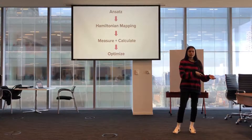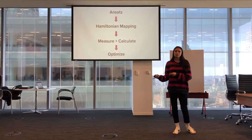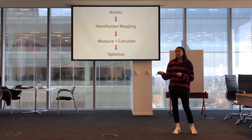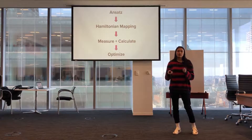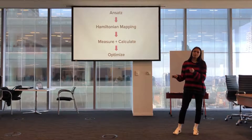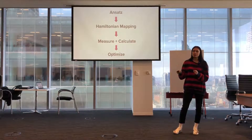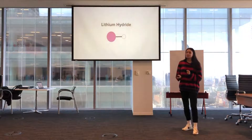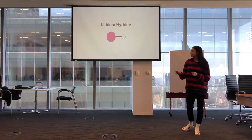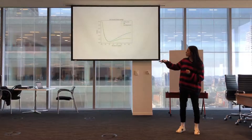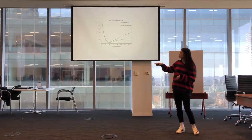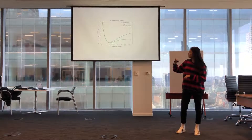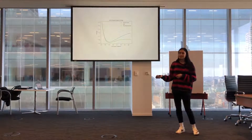There are four different parts to the Variational Quantum Eigensolver. First, we create an ansatz. After that, we map the molecular Hamiltonian into a qubit Hamiltonian. Then we measure all our values and calculate the expectation value. Finally, we optimize our parameters and reiterate through the loop. Using these four steps, I was able to find the ground state energy of lithium hydride — all the values converge onto the ground state energy and the associated bond length, which matched perfectly compared to the exact eigensolver.